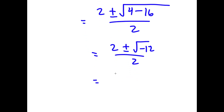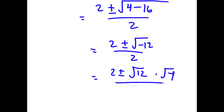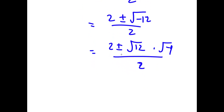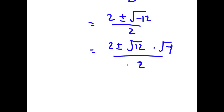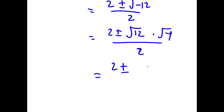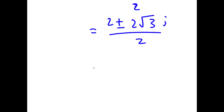The square root of negative 12 equals the square root of 12 times the square root of negative 1 over 2. The square root of 12 simplifies to 2 plus or minus 2 root 3, and the square root of negative 1 is simply i. So I have this over 2. Now if I divide both through by 2, I get 1 plus or minus the square root of 3 times i. So these are my two solutions.